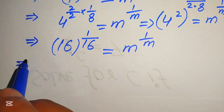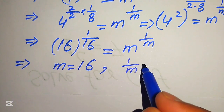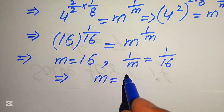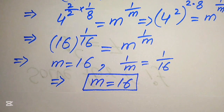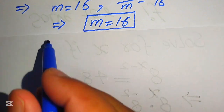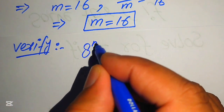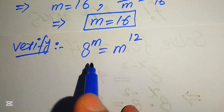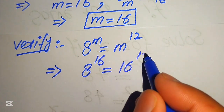Now we can compare: the base on the left equals the base on the right, giving m equals 16. Comparing the exponents, 1 over m equals 1 over 16, which also gives m equals 16. So the final value is m equals 16. To verify, we substitute back: 8 to the power of 16 equals 16 to the power of 12.